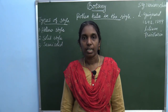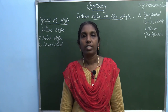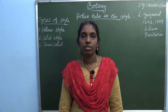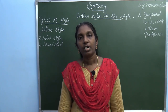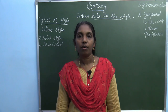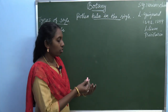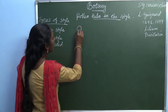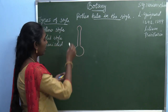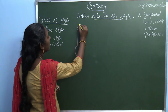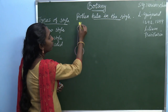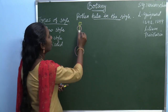Good morning and welcome back to botany class. In the previous class we discussed the process of fertilization, and this class too we are going to discuss the events of fertilization. Fertilization is the fusion of male and female gametes. When you see the structure of gynoecium it contains stigma, style and ovary. In the stigmatic surface the pollen grains are dusted, and this pollen grain starts to germinate and develops the pollen tube.